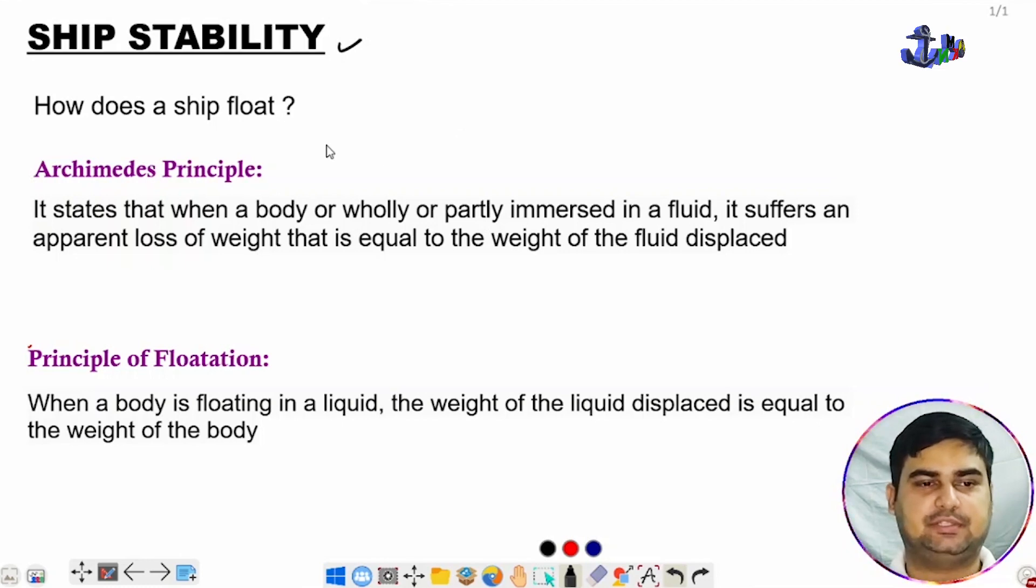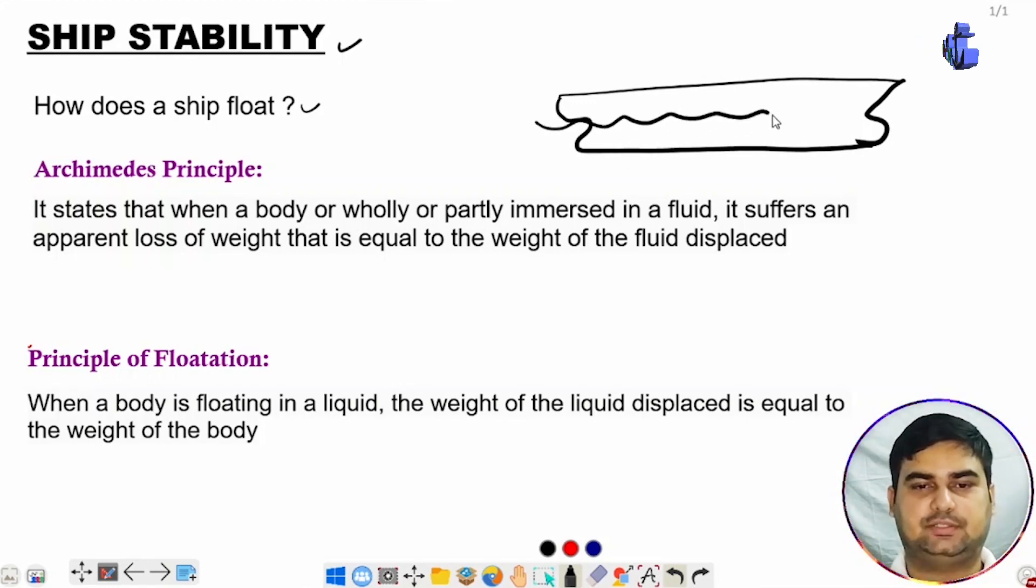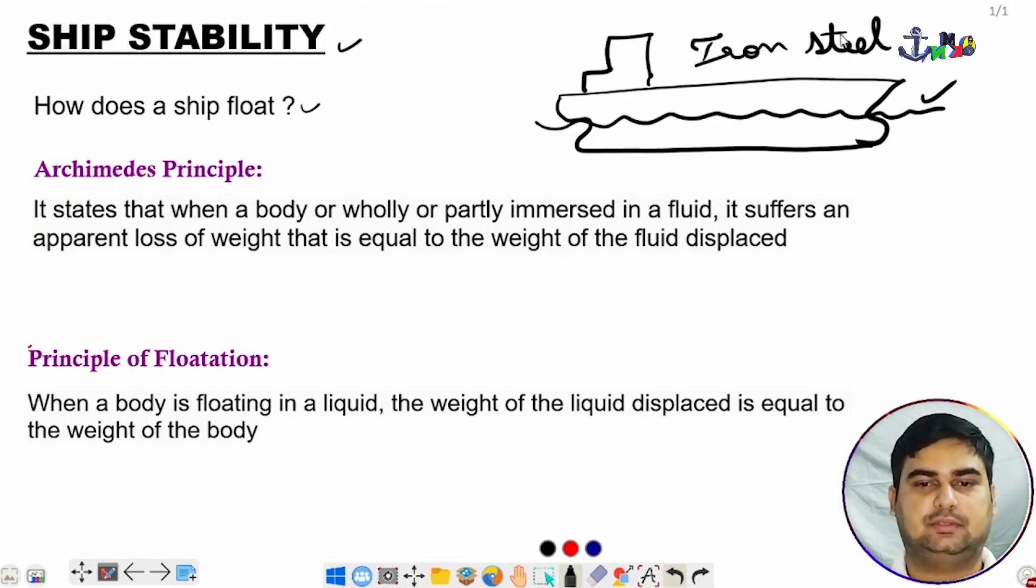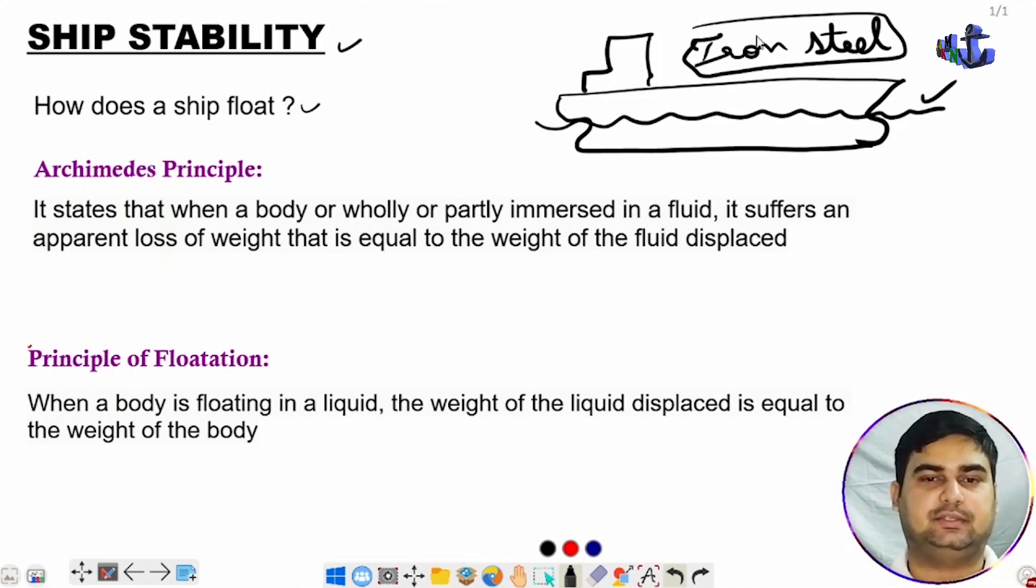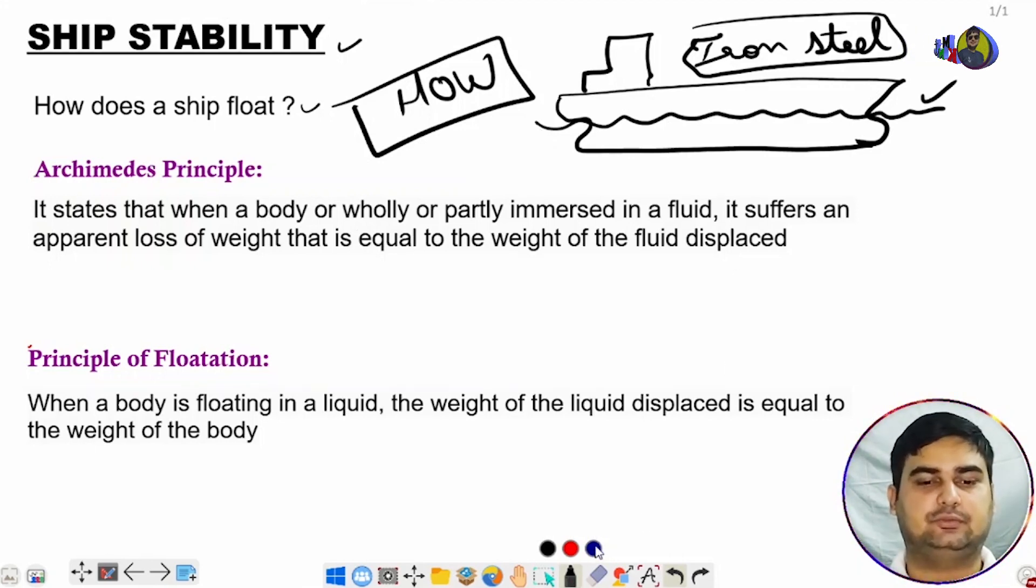We will start with ship stability and understand how does a ship float. Suppose this is a ship floating at some draft. It is made up of iron, steel, and many other heavy metals and equipment, but still it is floating in water. You will understand the basics in this video and why the ship floats.